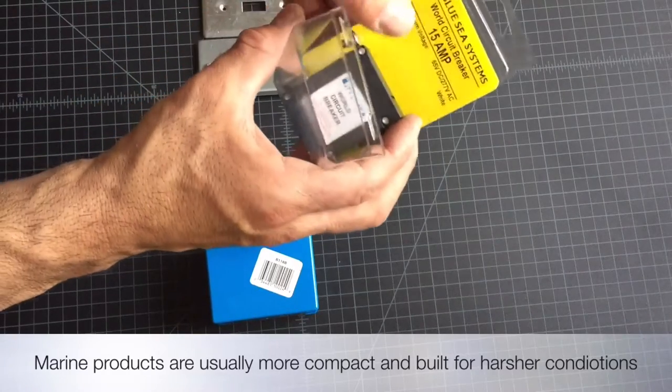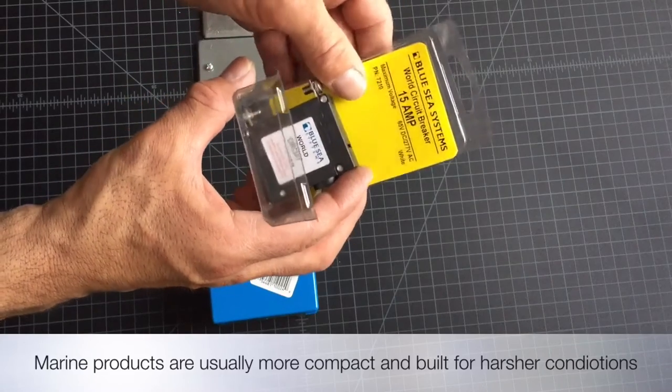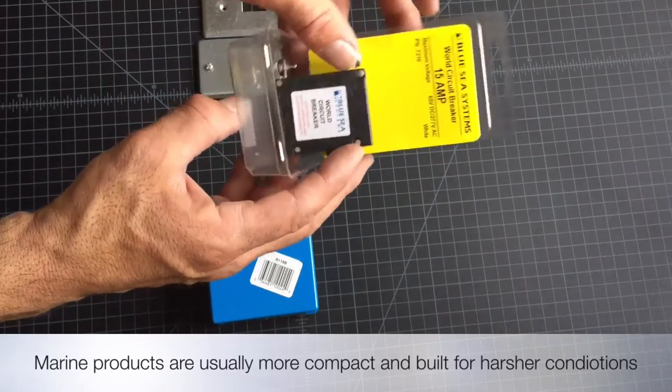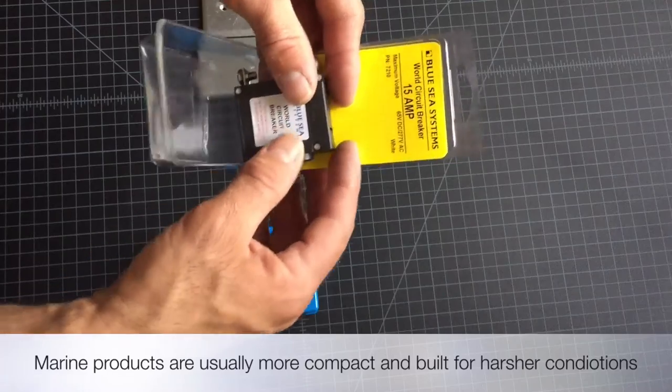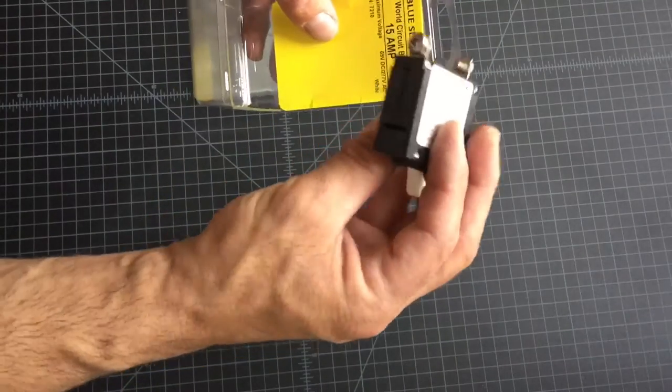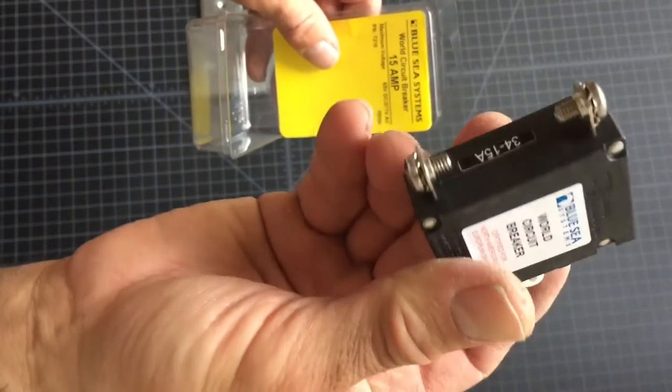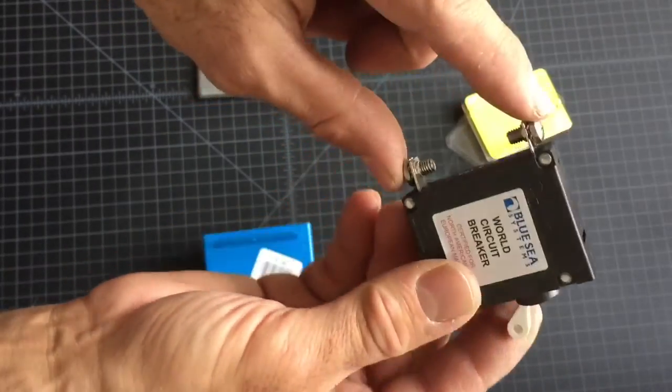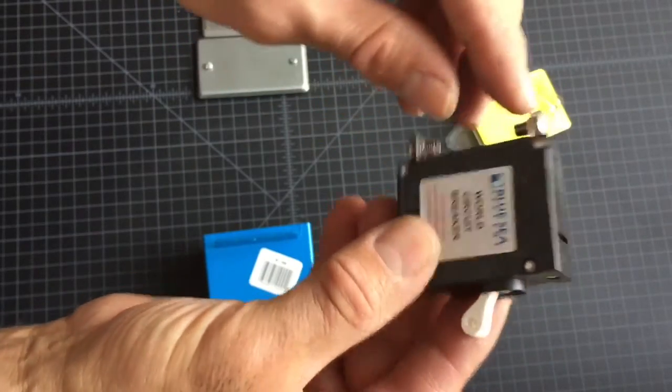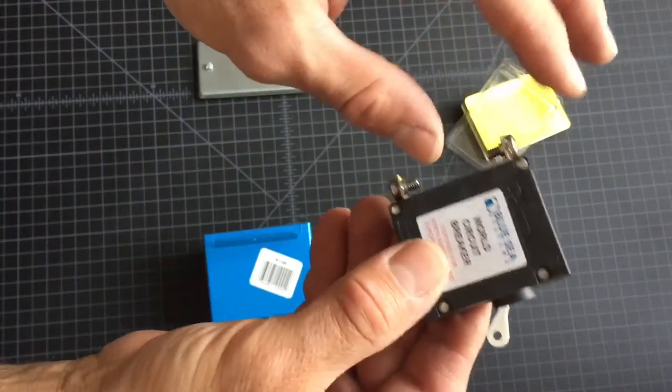Again here, a Blue Sea product. As you'll see in some of my videos, a lot of the stuff they make is very good and applies very well in our van applications because this stuff is designed so that you can easily install it in tight quarters. As you see here, it's got easily accessible screws where you'll end up connecting your hot terminals.